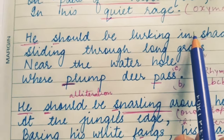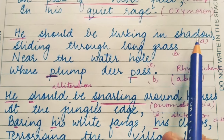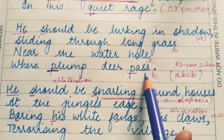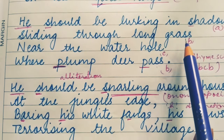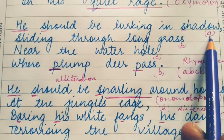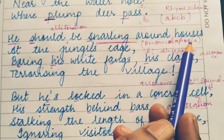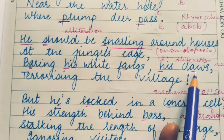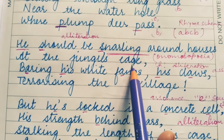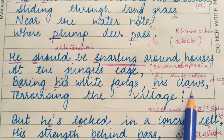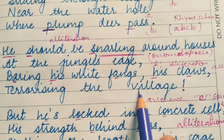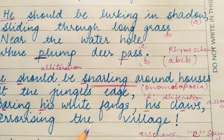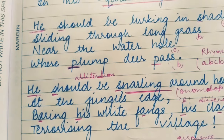This ABCB pattern follows in all stanzas. In the second stanza: shadow is A, grass is B, whole is C, and grass and pass rhyme similarly, so BB — again ABCB. In the third stanza: houses is A, edge is B, claws is C, and village and edge rhyme with each other, so BB — again ABCB. So the whole poem has the rhyme scheme of ABCB.